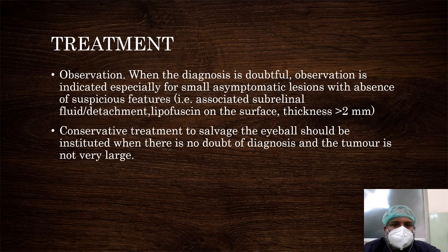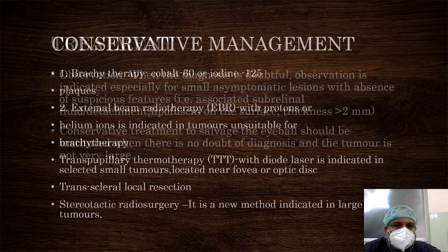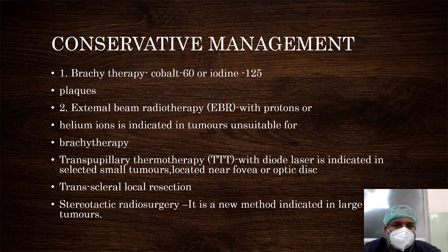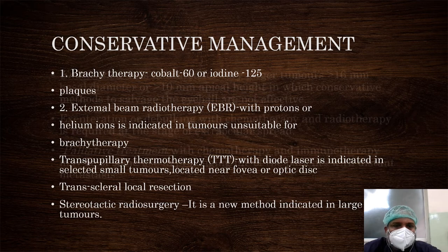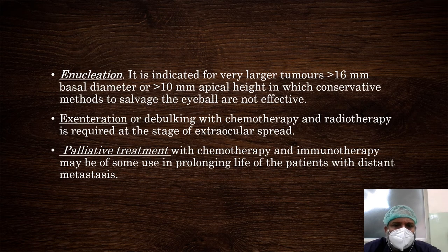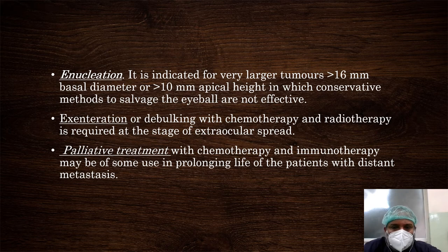Treatment: observation is indicated when the diagnosis is doubtful or for small asymptomatic lesions. Conservative treatment to salvage the eyeball is pursued when diagnosis is confirmed and the tumor is not very large. Conservative management options include brachytherapy with cobalt-60 or iodine-125 plaques, external beam radiotherapy with protons or helium ions, transpupillary thermotherapy, and transscleral local resection or stereotactic radiosurgery. Enucleation is considered if tumor basal diameter exceeds 16 mm or tumor height exceeds 10 mm. Exenteration or debulking with chemotherapy and radiotherapy addresses extrascleral spread. Palliative treatment with chemotherapy and immunotherapy helps in prolonging the patient's life.